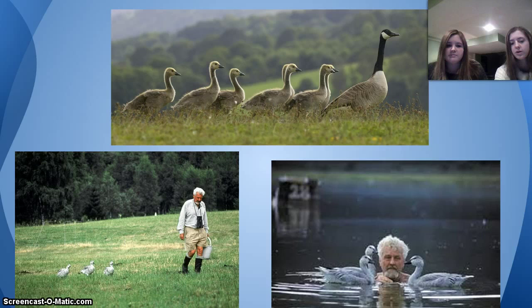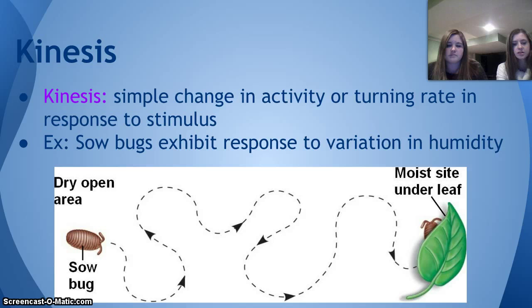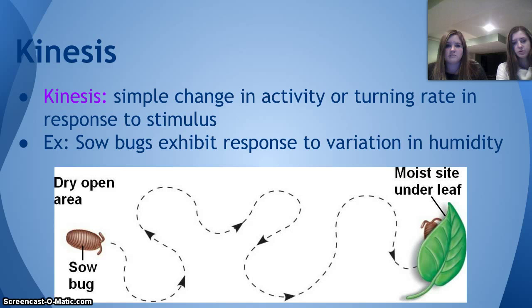There are different directional movements. The first is kinesis, which is a simple change in activity or turning rate in response to a stimulus. For example, sowbugs exhibit a response to variation in humidity. In a dry open area, sowbugs move around a lot, but once they get to a moist site like under a leaf or a log, they stop moving around as much. The stimulus is humidity level, and that determines the amount of movement they have.